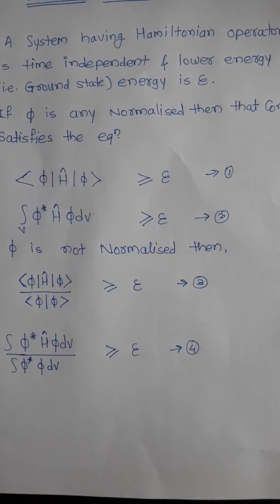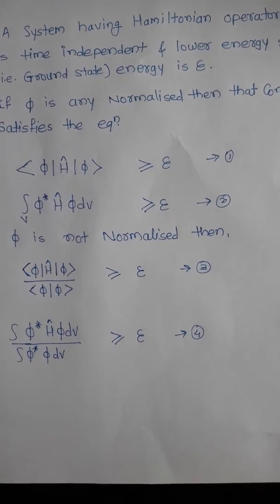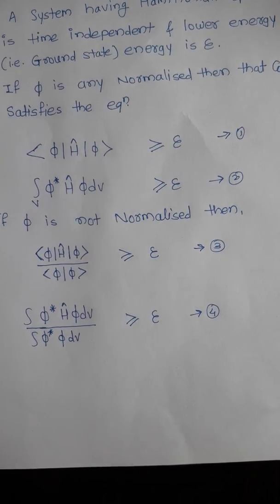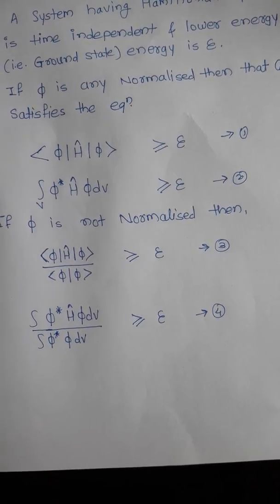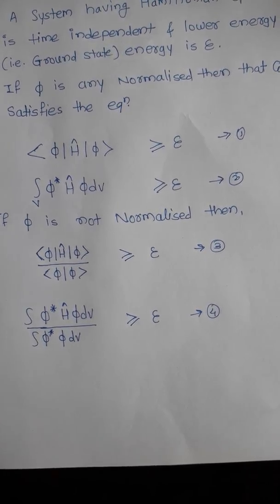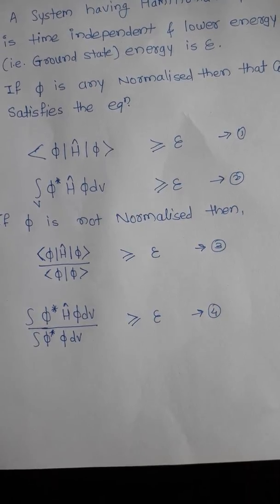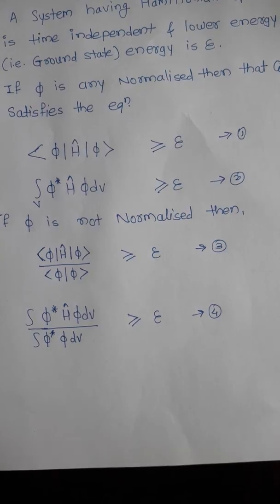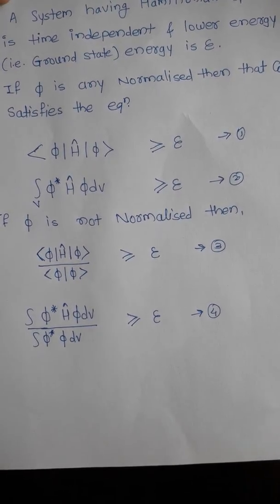If Phi is not normalized, then the equation becomes ⟨Φ|H|Φ⟩/⟨Φ|Φ⟩ is less than or equal to E. This is the third equation.